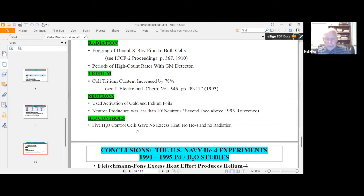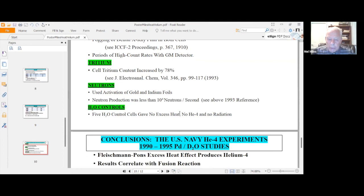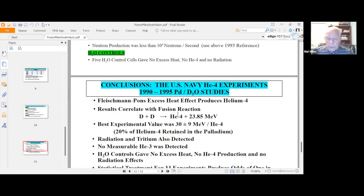We ran H2O control cells, five control cells. They gave no excess heat, no helium-4, and no radiation. Our conclusions from these, especially from this 1990 study, but including also the studies up to 1995 when we had Navy funding. The Fleischmann-Pons excess heat effect does definitely produce helium-4, and the results correlate best with the fusion reaction D plus D going to helium-4 with an energy of 23.85 MeV per helium-4.